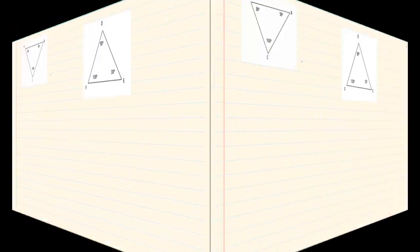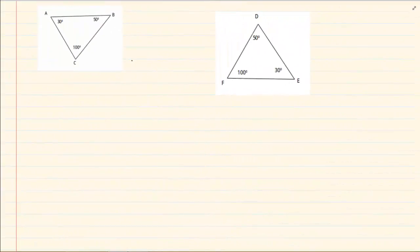The next thing you learn is similar. Now similar only has one rule. One side is 30, the other side is 30. Then we have a 50 and we have a 50, and then we have a 100 and a 100. So it only works with one rule which is angle, angle, angle.